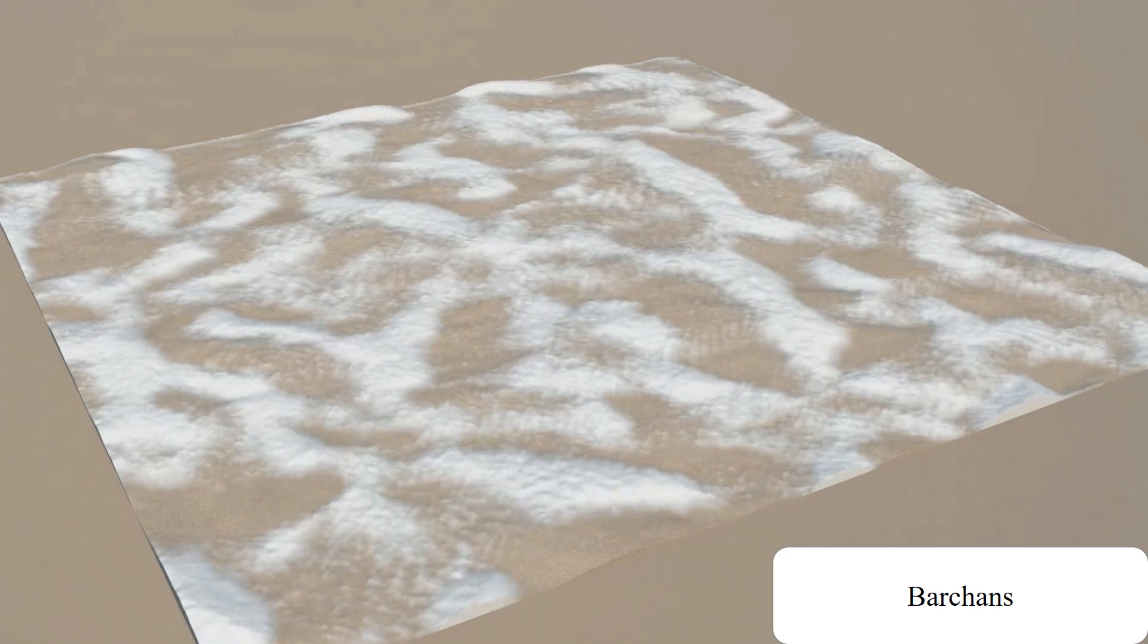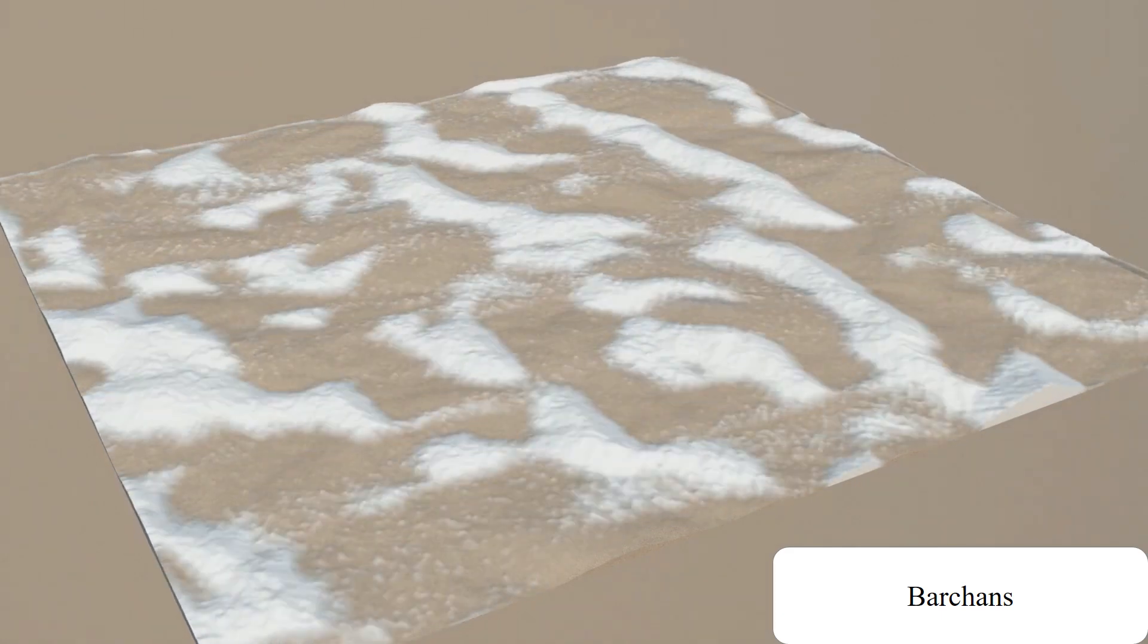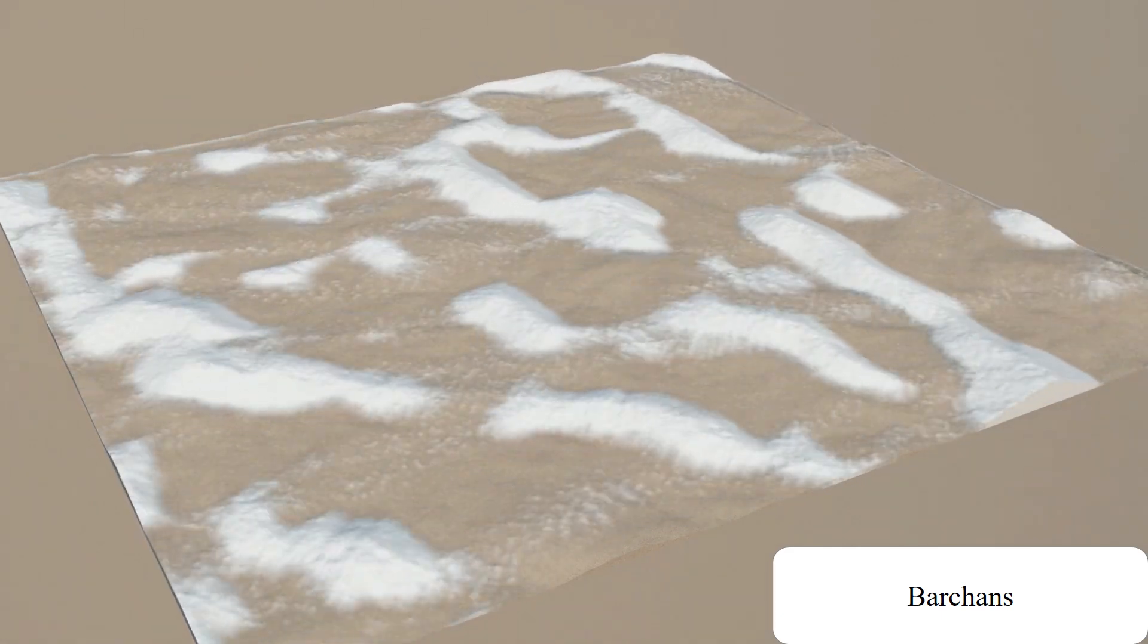Barchans are crescent-shaped dunes, also formed with unimodal winds at high speed when the sand supply is low.